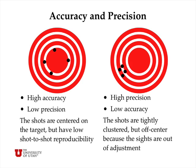On the right-hand side, we have just the opposite: high precision and low accuracy. The shots are very tightly clustered, indicating high precision, but the cluster itself is far from the center of the target. This would happen, for example, if you had a very good marksman but the sights of the gun were slightly out of adjustment.